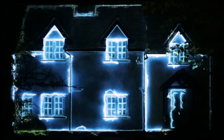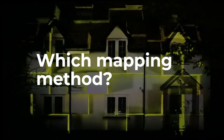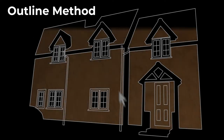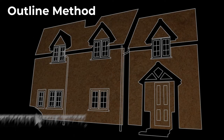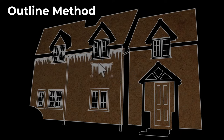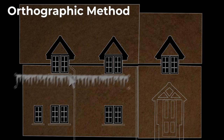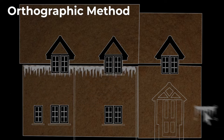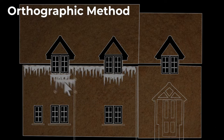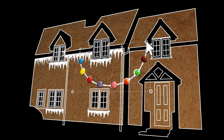Then you're going to need to decide which mapping method to use. On the one hand, you have the outline method, where you design your show over a guide with perspective baked in. On the other hand, you have the orthographic method, where you design on a flat guide without perspective and introduce perspective later using projection mapping software. Each have their advantages and disadvantages, which I'll discuss.